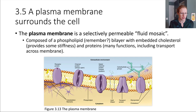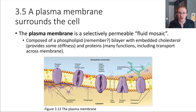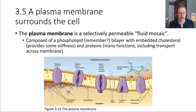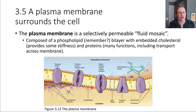Phospholipids are the main component of the plasma membrane. In orange we can see these are the polar head groups that like to be near water. And then dangling downwards, these are the hydrophobic lipid tails — they're trying to stick together to get away from the water. So we get what's called a bilayer: two layers of phospholipids.